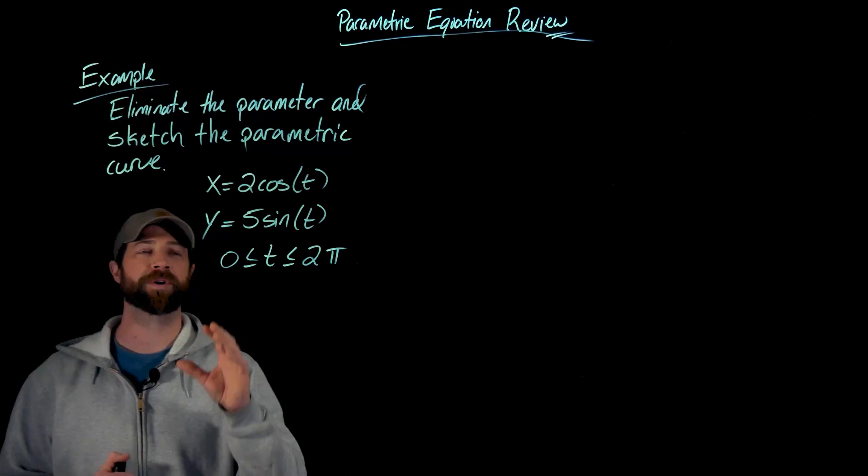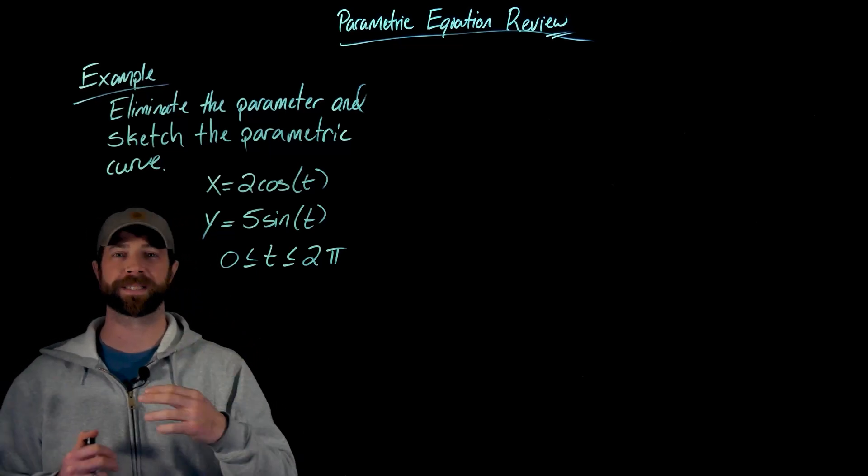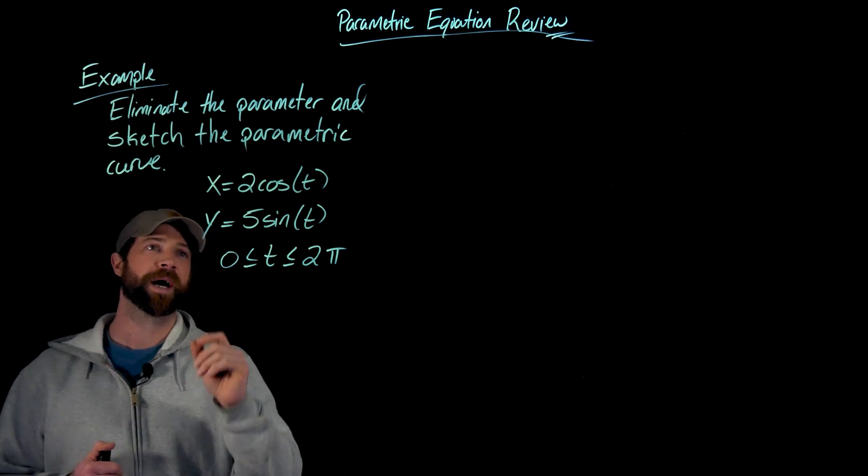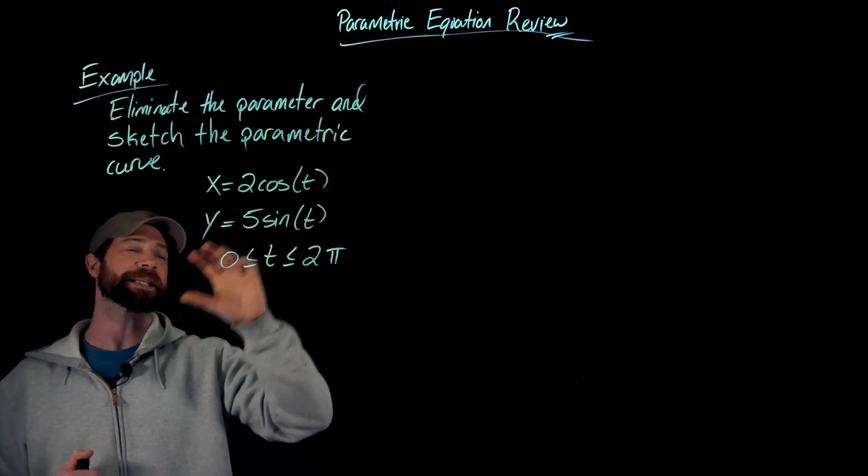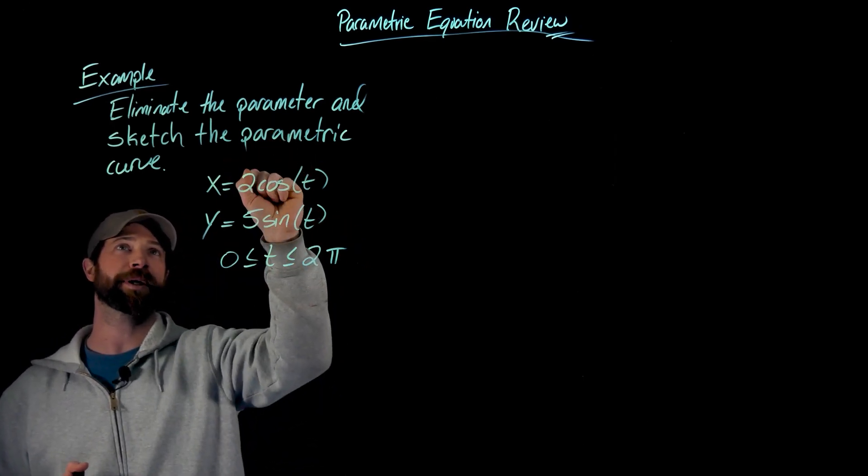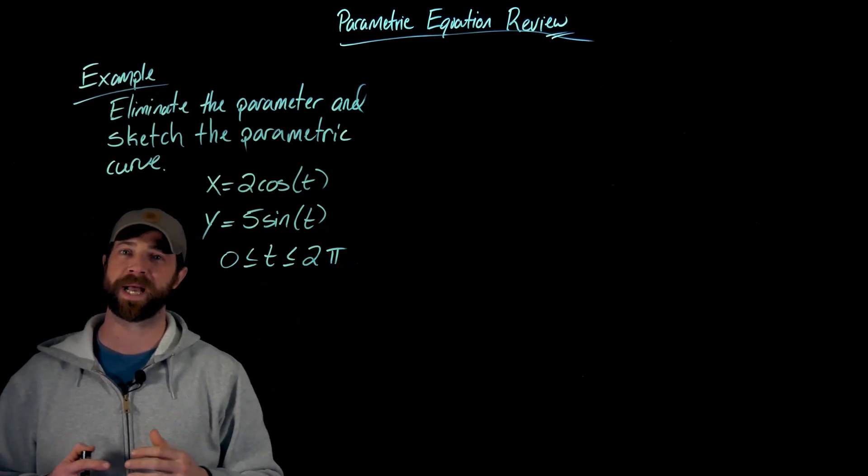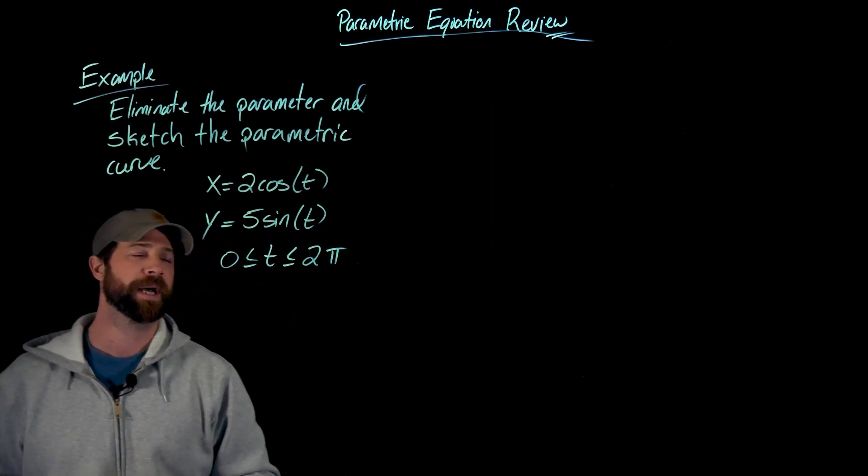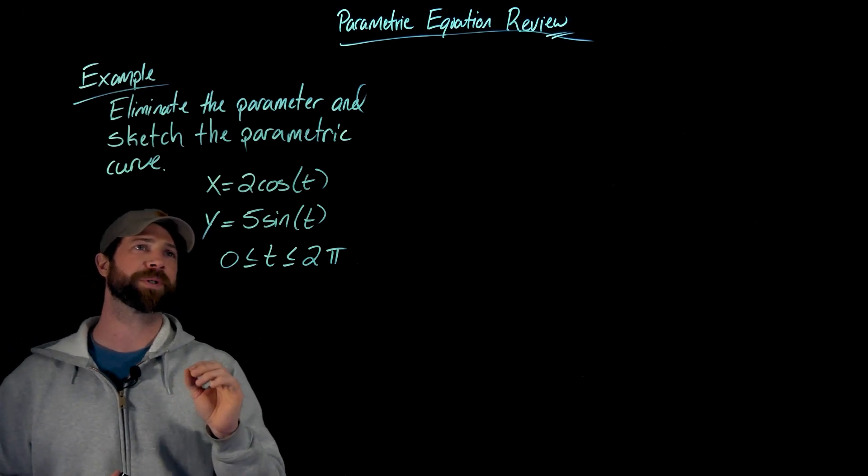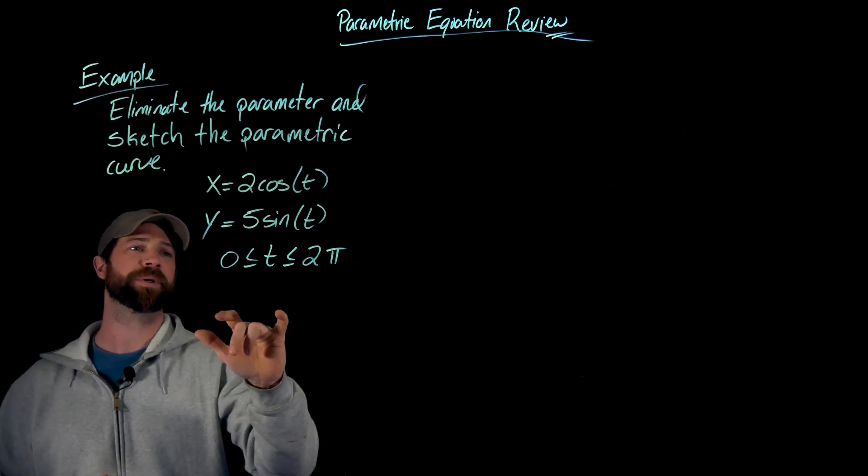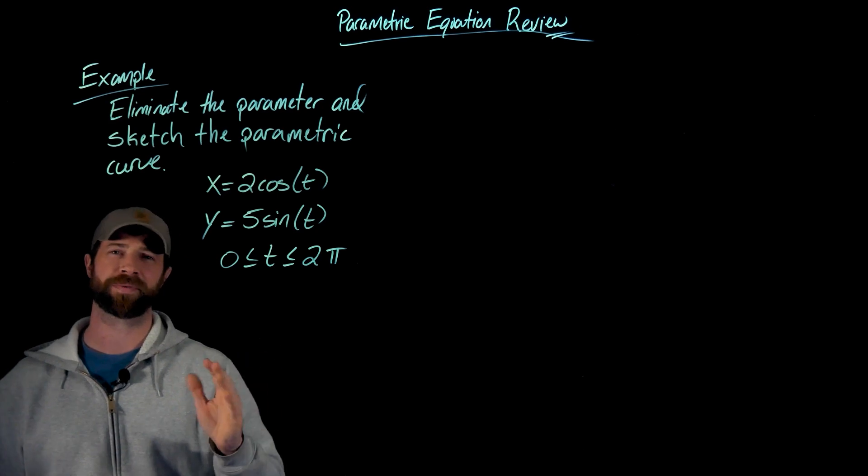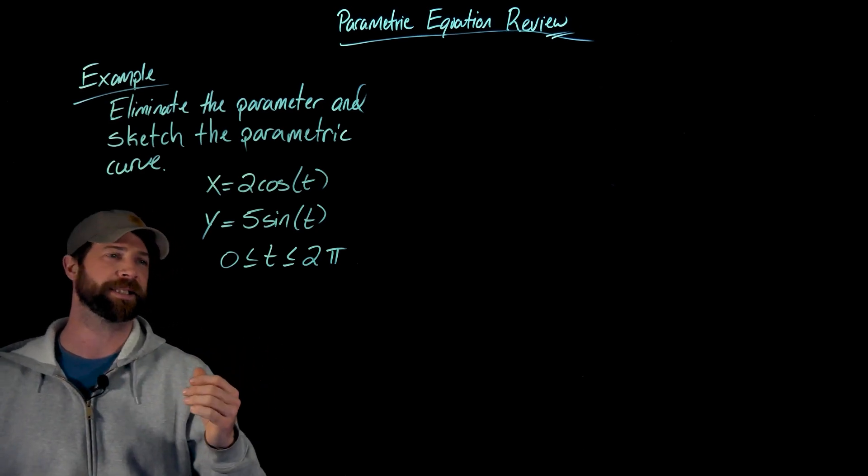All right, so in this example we're being asked to eliminate the parameter and sketch this parametric curve. When I eliminate the parameter I'm going to get a Cartesian or rectangular coordinate equation relating x and y without the t. The one thing I'm going to do first is list the range of values for both x and y just to get an idea.